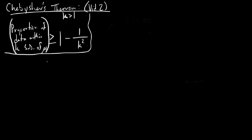In this video we're going to revisit Chebyshev's Theorem. We discussed this in the first video as being a method for finding which proportion of data would fall within k — k standard deviations of some given mean, mu.